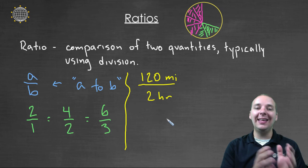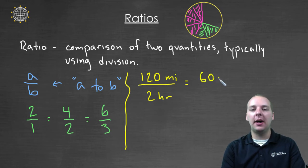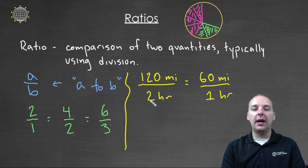And you could take any equivalent ratio, and re-write this. For example, this is the same as the ratio sixty miles in one hour. The reason that is, is because a hundred and twenty divided by two gives us sixty, or sixty over one.